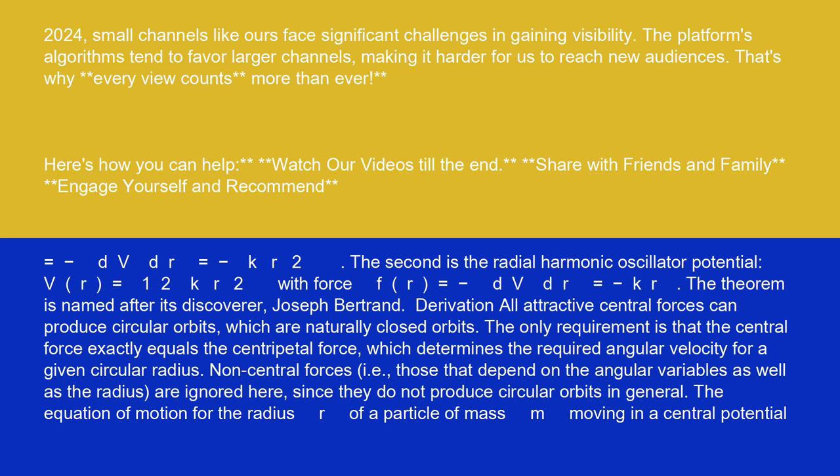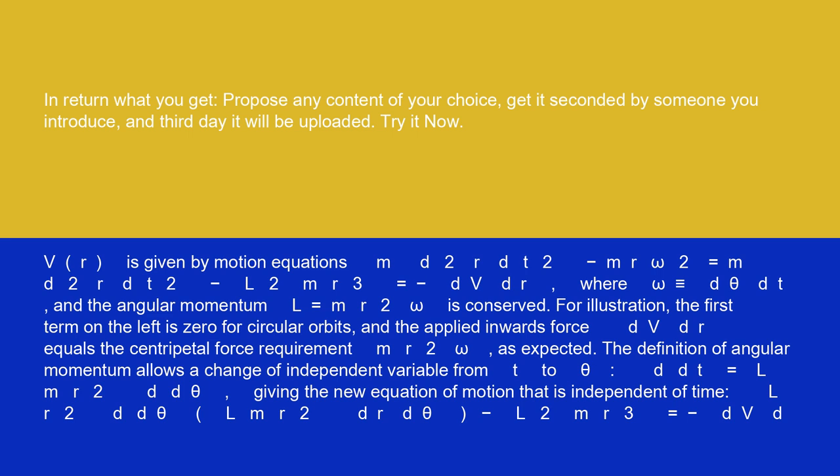The equation of motion for the radius r of a particle of mass m moving in a central potential V(r) is given by motion equations: m d²r/dt² minus m r ω² equals m d²r/dt² minus L²/(m r³) equals minus dV/dr, where ω is identical to dθ/dt and the angular momentum L equals m r² ω is conserved.